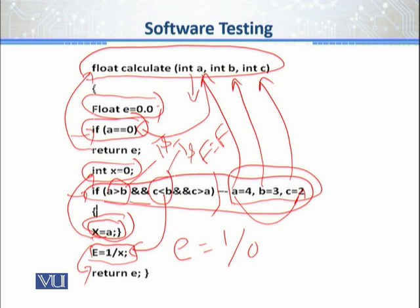यानी हम 1 को 0 पर divide नहीं कर सकते — it will intellectually crash your program. तो जब program ही crash हो जाएगा तो return क्या होगा? Reason यह निकला कि हम लोग statement level coverage को 100% ensure नहीं कर सकते. Root cause: अगर एक value B से बड़ी है और दूसरी value तीसरी value से बड़ी है, तो पहली value तीसरी से कभी बड़ी नहीं हो सकती — this condition is logically wrong. एक statement को हम reach नहीं कर पा रहे due to this logical error.